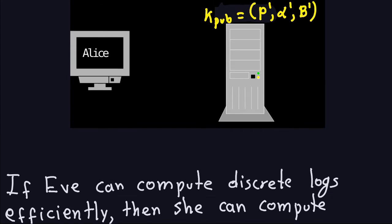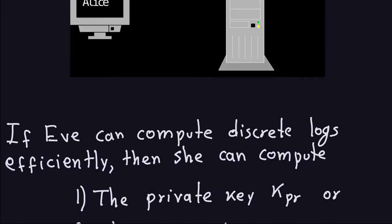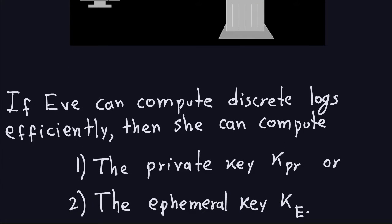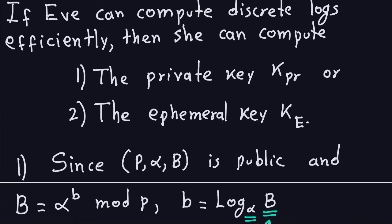This forgery can be prevented using certificates, something we haven't covered yet. The other problem is that the Elgamal signature is based on the security of the discrete log. If the attacker Eve can compute discrete logs efficiently, she can compute the private key and the ephemeral key. If Eve has the private key, she can sign messages and make others believe she is Bob, which defeats the purpose of the Elgamal signature.